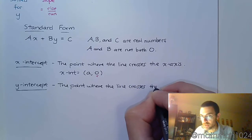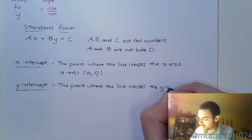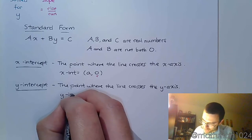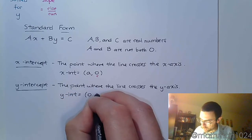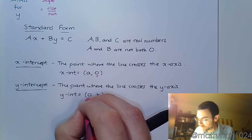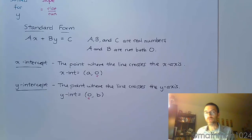The point where the line crosses the y-axis. And every y-intercept is going to take on the form (0, b). So what we know about every y-intercept is that the x-value is going to be 0.